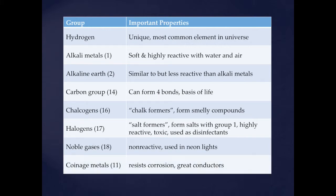The final group we're going to look at are the coinage metals — that's group 11: copper, silver, and gold. They resist corrosion, which is why they're used in coins. They can corrode, but think about iron — if we had iron coins, how fast would they rust in our pockets? In contrast, copper, silver, and gold are very resistant to corrosion, specifically gold. Gold does not develop much of a coating or patina like copper and silver do. Silver can oxidize a little bit, but very slowly. All three of them are great conductors, and we use copper for our wiring.